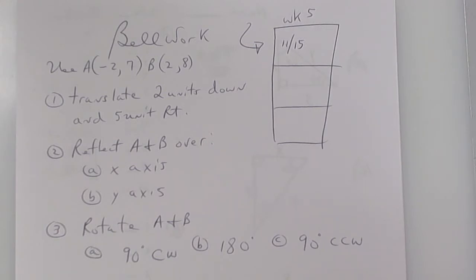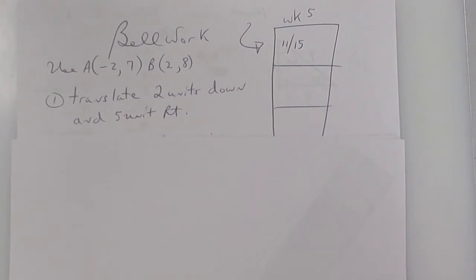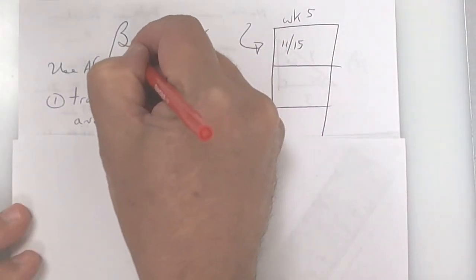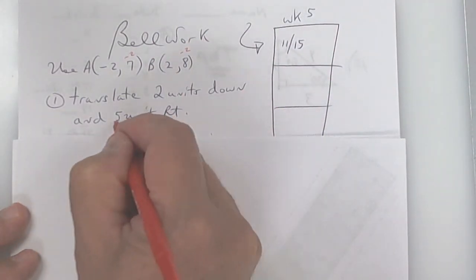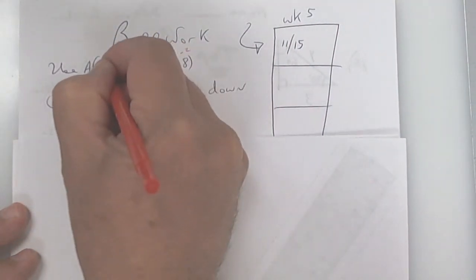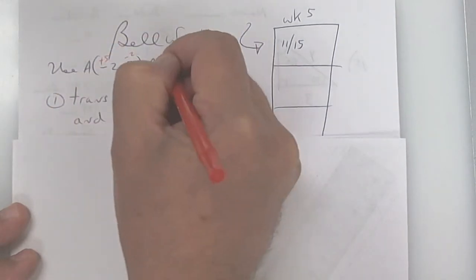We have points A and B, and I want you to do all three transformations. This first one says take A and B and go two units down — going two units down means you subtract two from your y. Then it says five units to the right, which is going to be a plus five on the x.